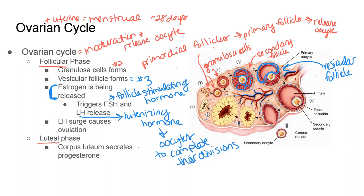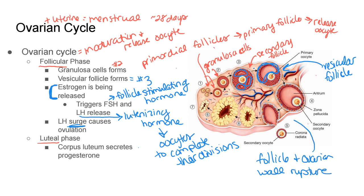In addition to having those oocytes complete their divisions, there will be a surge — a large release — of luteinizing hormone that will happen around this time as well, which will cause the actual ovulation. Ovulation is going to be the rupturing of the follicle and the ovarian wall to actually release the egg. The follicle and the ovarian wall will rupture and release the oocyte out for those fimbriae to sweep up into the uterine tube — all in response to this luteinizing hormone surge.